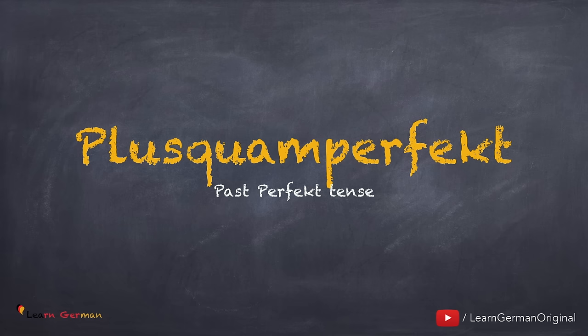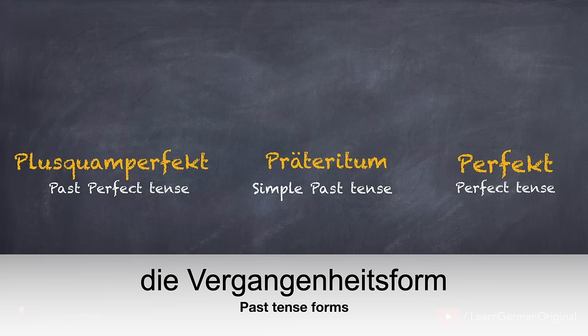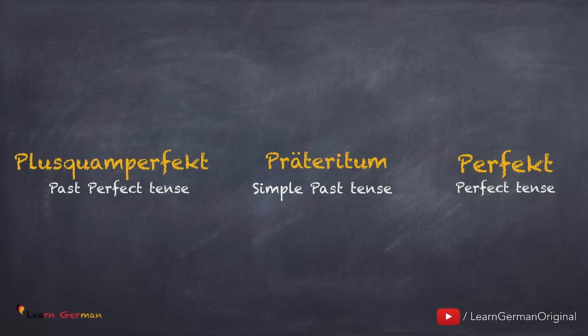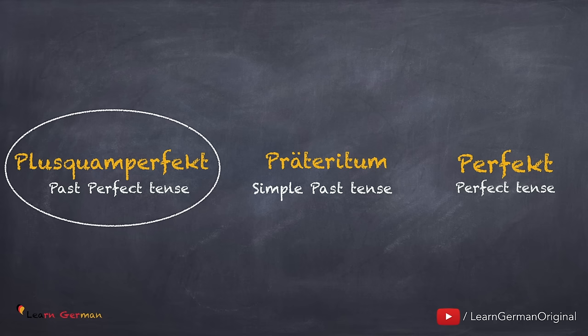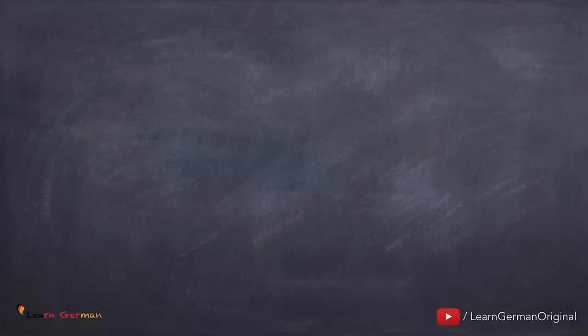So fangen wir an. Lektion 32: Das Plusquamperfekt. Es gibt drei Vergangenheitsformen im Deutschen: Perfekt — das haben wir in A1 gelernt. Präteritum — das haben wir in Lektion 24 in A2 gelernt. Und Plusquamperfekt — das lernen wir jetzt.